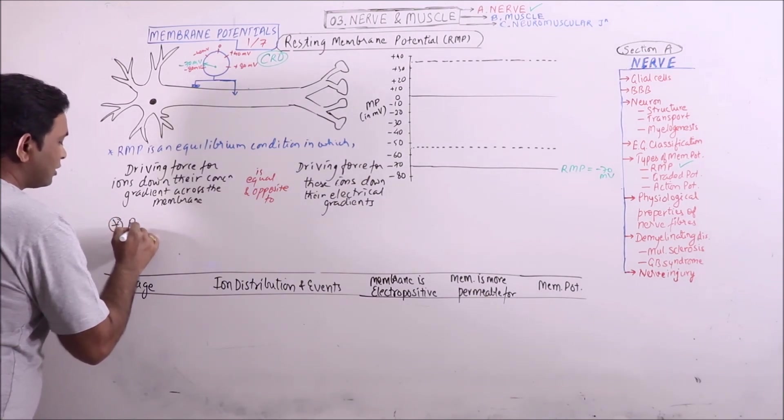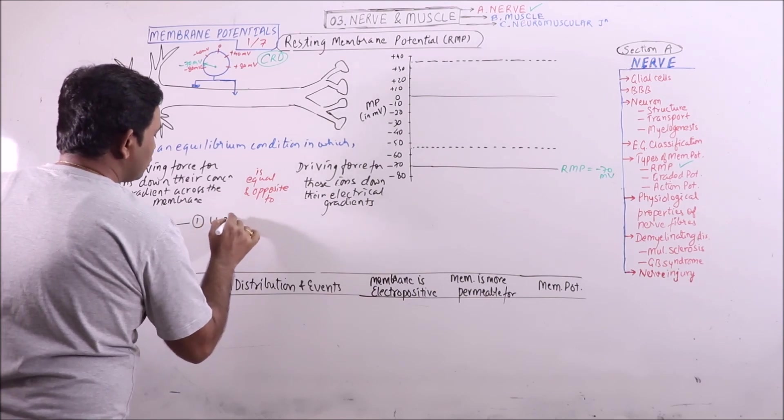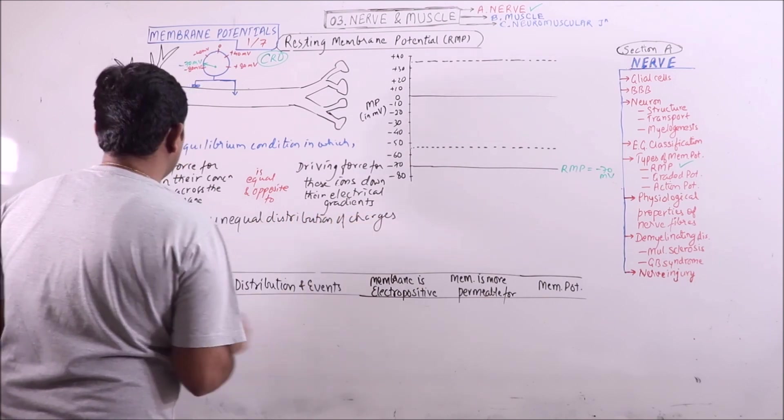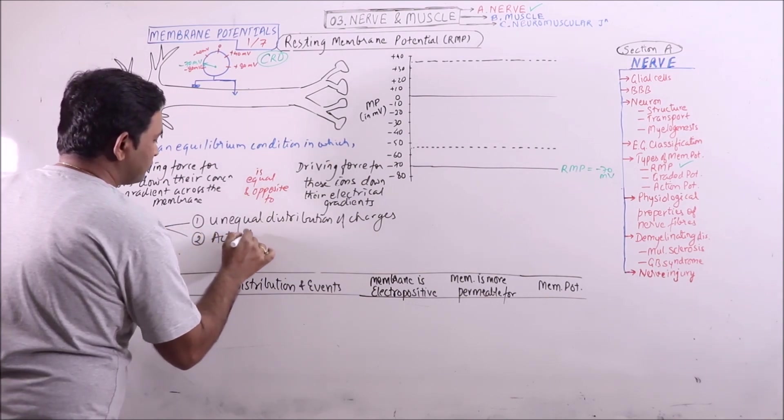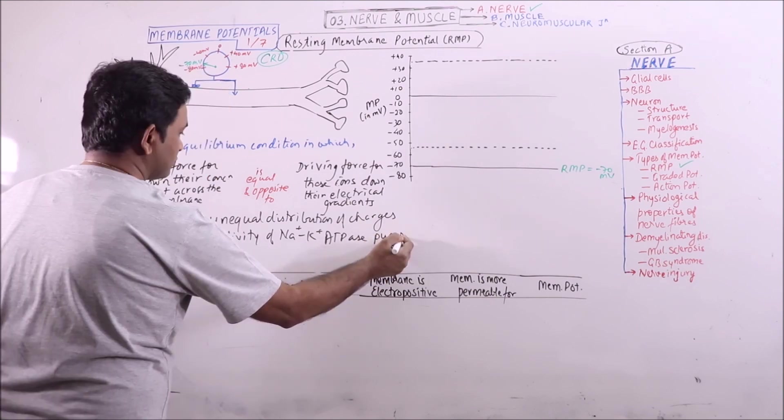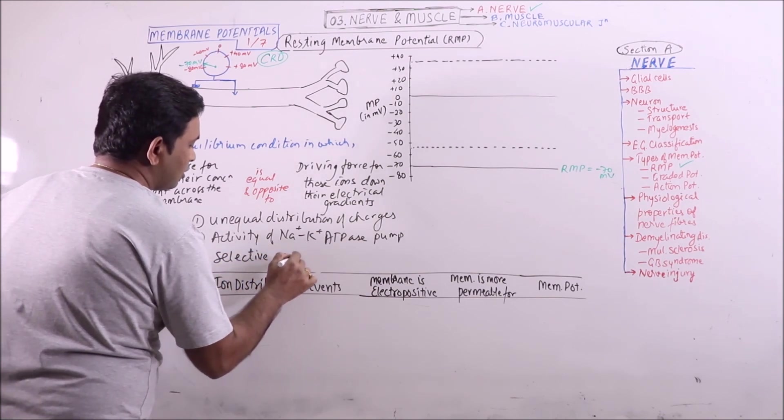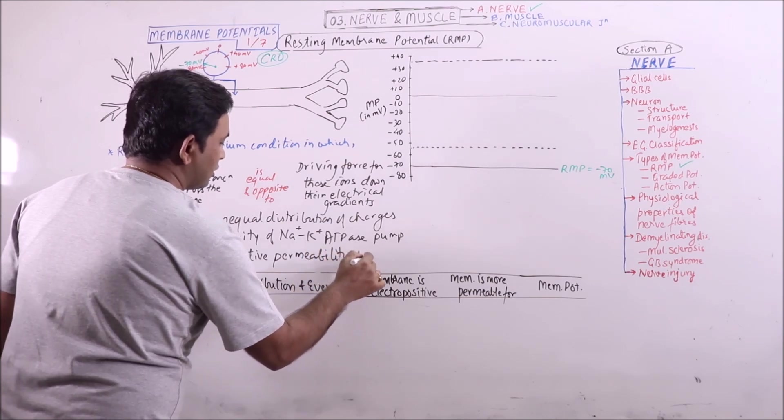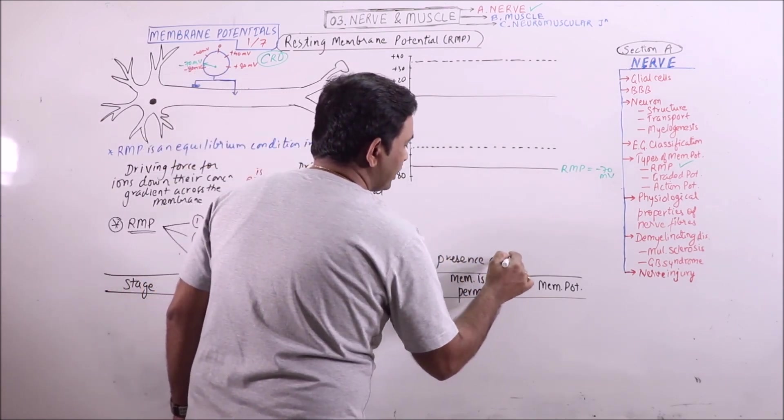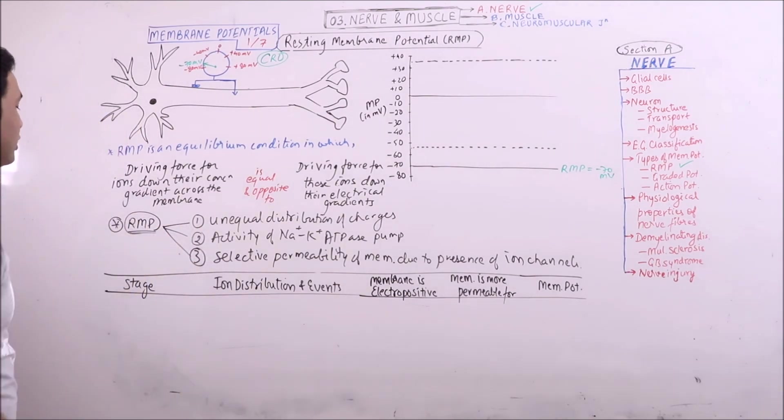The factors which result in RMP are basically: First one is unequal distribution of charges. Second is activity of sodium potassium pump, that is sodium potassium ATPase pump. And the third one is selective permeability of membrane due to presence of various ion channels. These are the three main factors which contribute to a particular RMP.